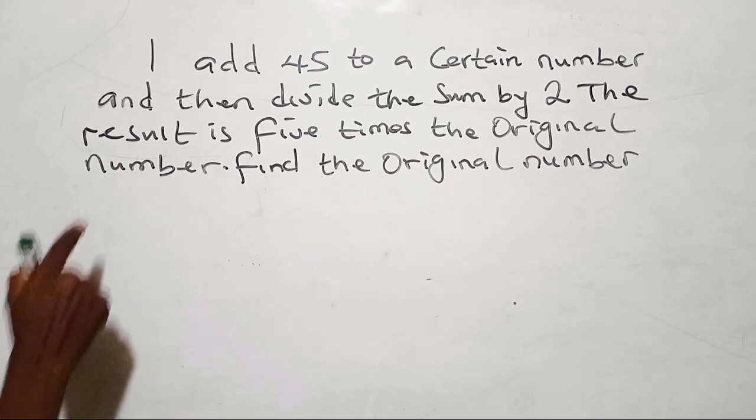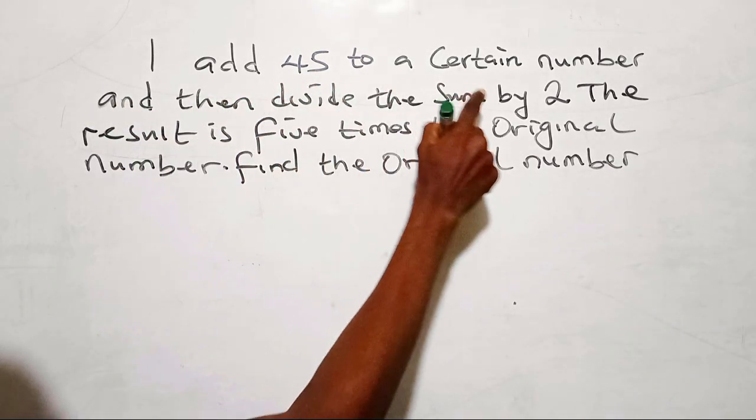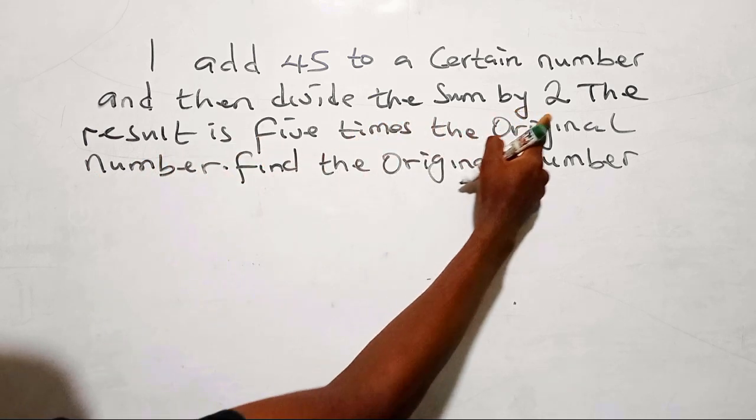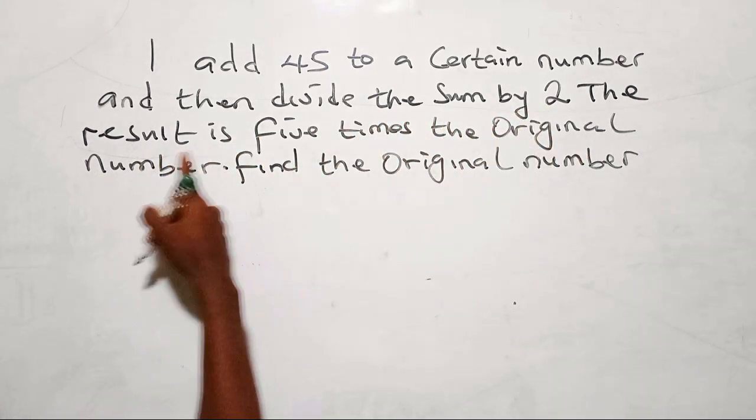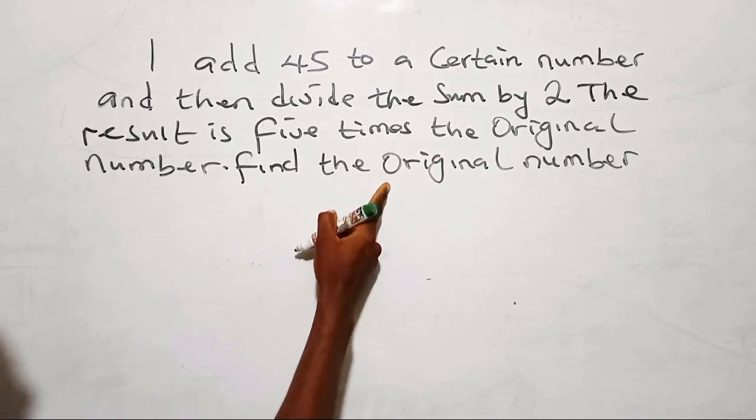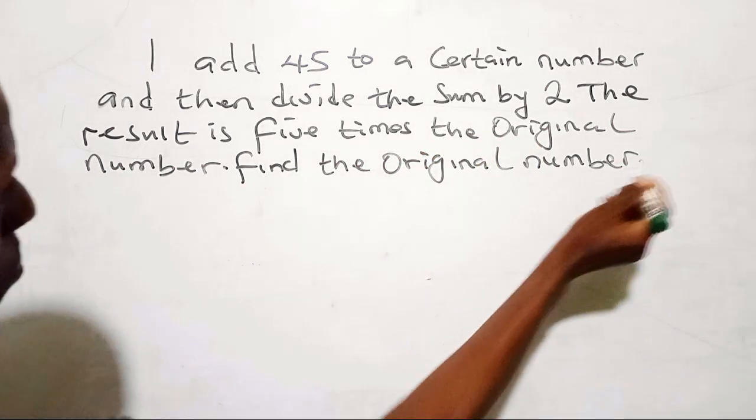The question says, I add 45 to a certain number, and then divide the sum by 2. The result is 5 times the original number. Find the original number.